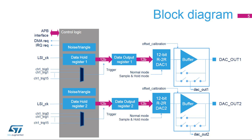The content of the data output register is then transferred to the converter. Before enabling the output buffer, the voltage offset needs to be calibrated. This calibration is performed at the factory, loaded after reset, and can be adjusted by software during application operation.